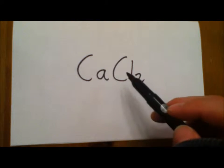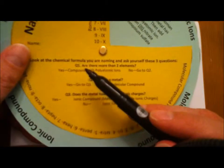We've got calcium and chlorine here. So let's ask ourselves these questions. Are there more than two elements? Well, we've only got two types of elements there. So our answer is no.